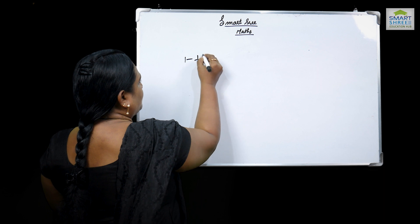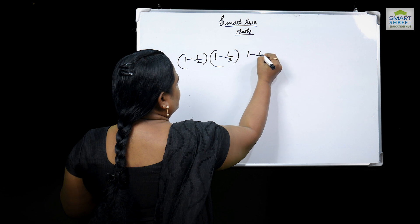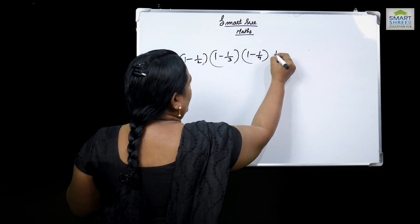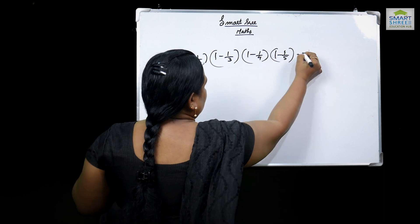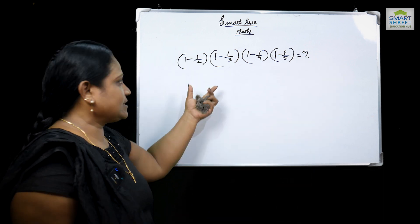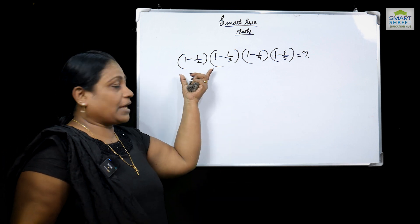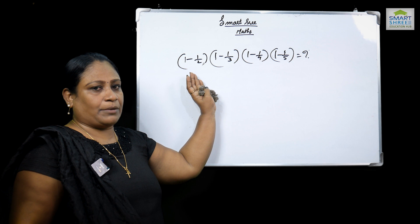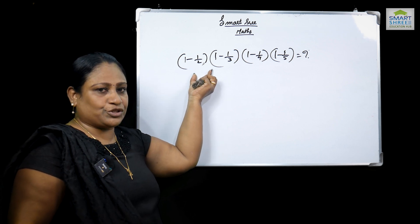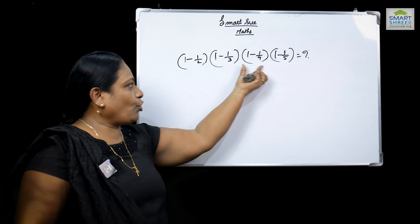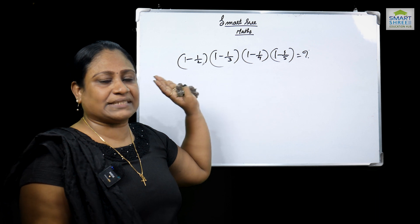The third question is: 1 minus 1 by 2, into 1 minus 1 by 3, into 1 minus 1 by 4, into 1 minus 1 by 5. What is the solution? We can multiply all the brackets together to give the answer.